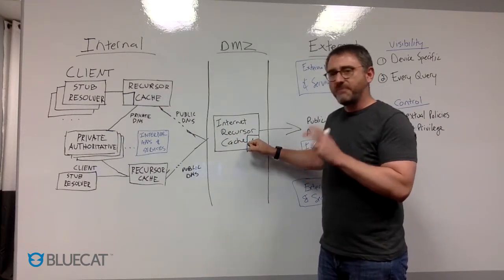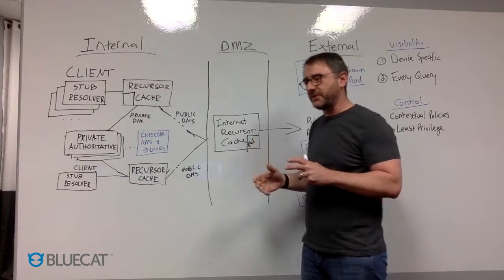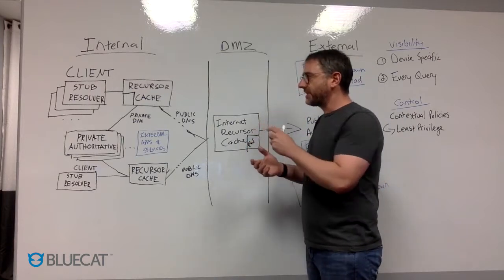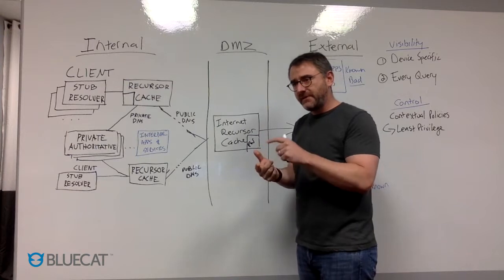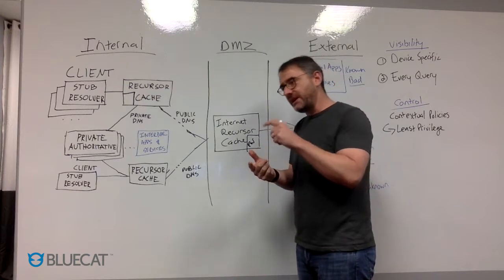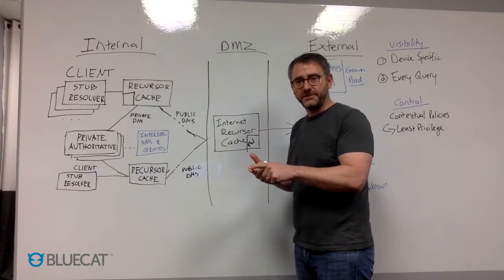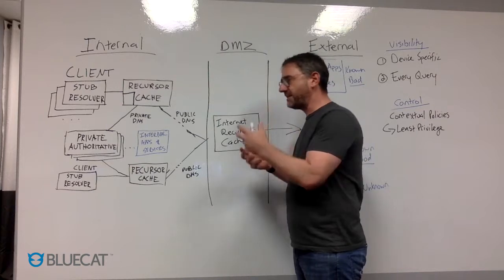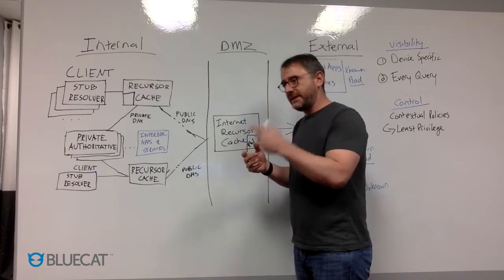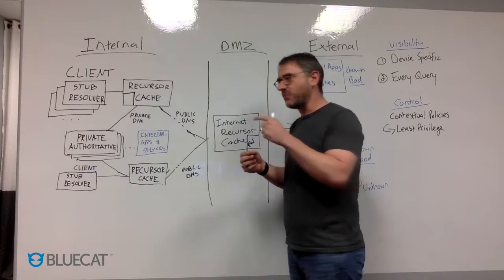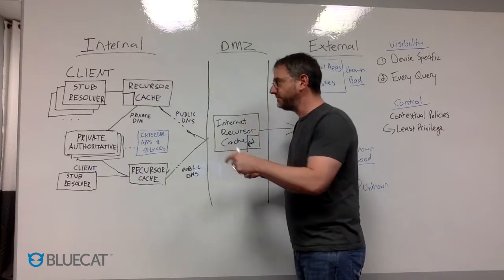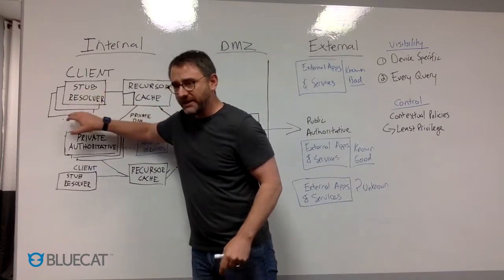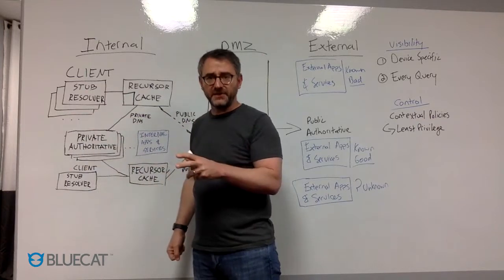So there's a better way to do this, to achieve some pretty interesting goals. One: have visibility to every single client's DNS queries, which are a proxy for the intent of those devices. DNS represents what those devices want to do, and if we know all of those clients, we provide a tremendous amount of visibility.